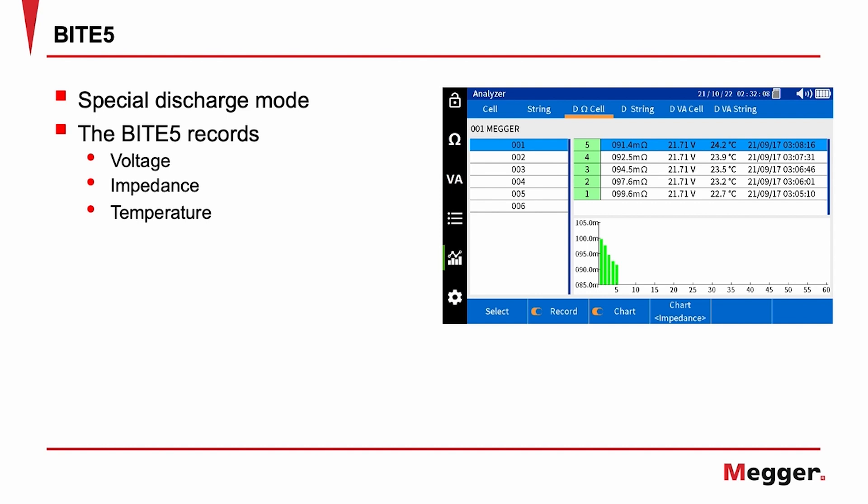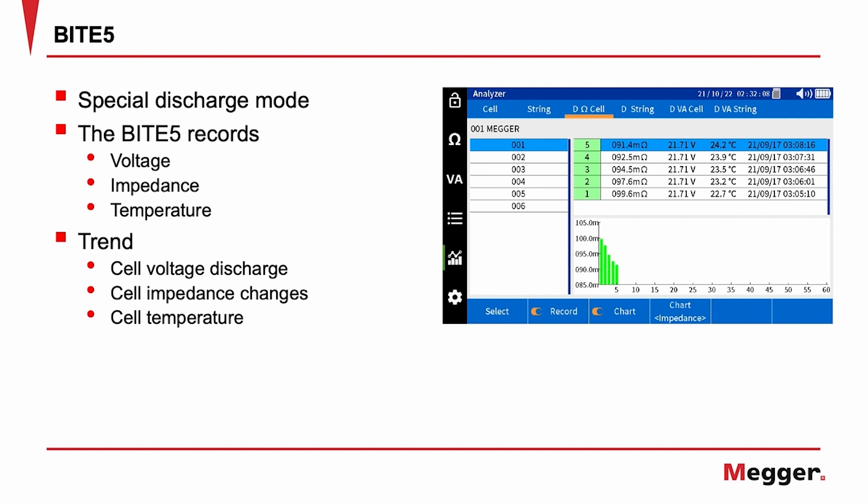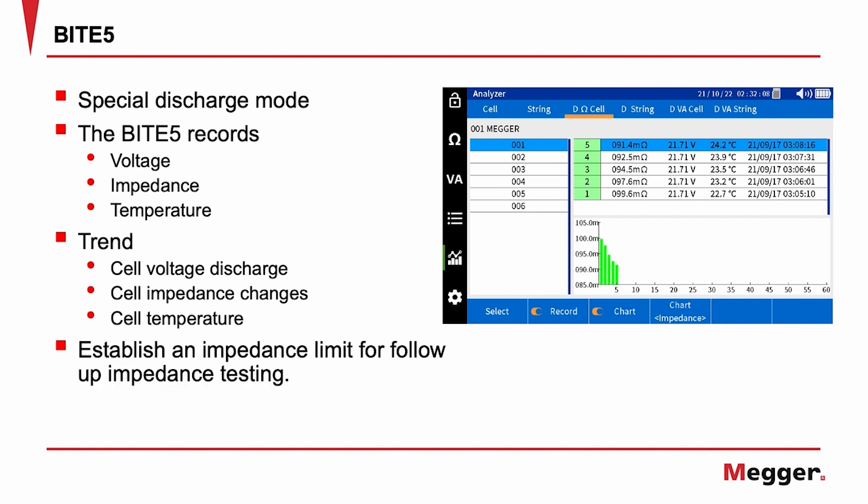The Byte 5 can also be used in a special discharge mode. In this mode, the Byte 5 will record the cell voltage, impedance, and cell temperature throughout the duration of the discharge test. This allows trending of not only the voltage discharge curve, but the battery's changes in internal impedance and negative plate temperature throughout the test.